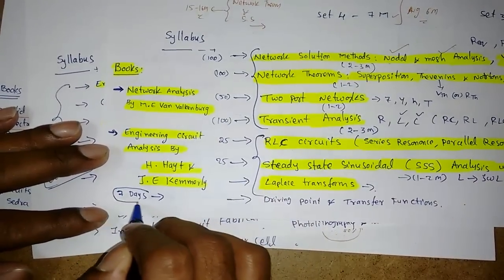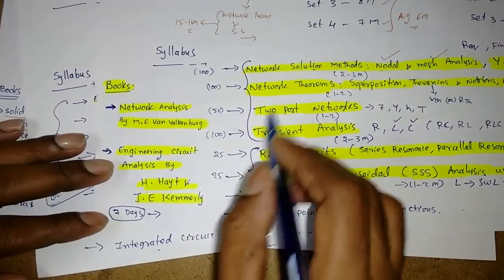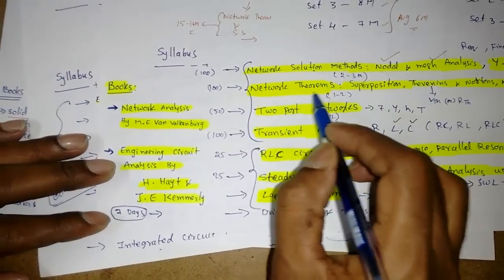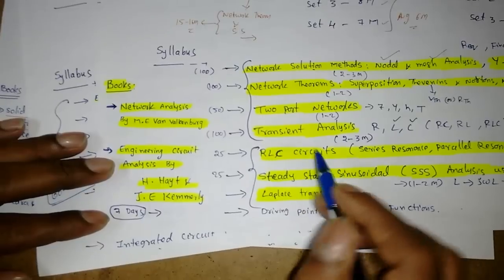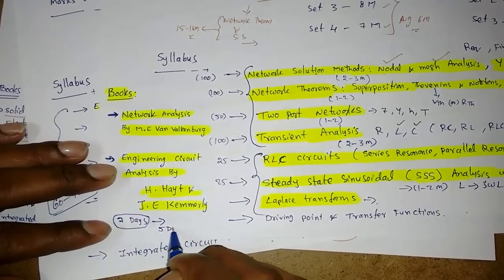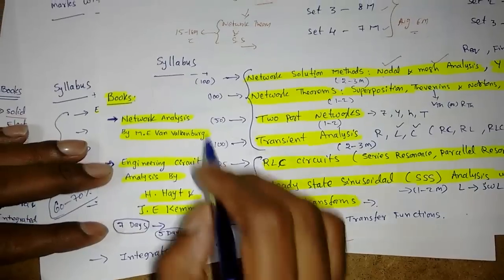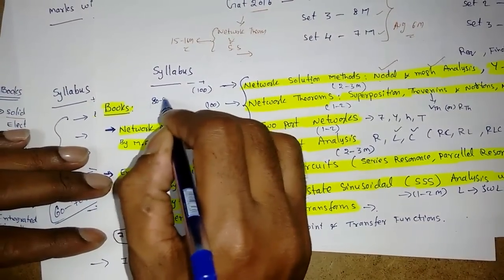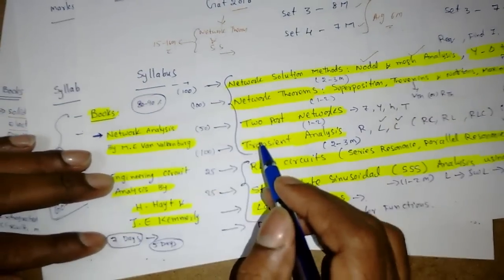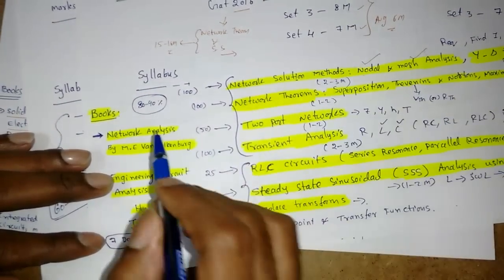In this seven days, do the practice of network solution method, network theorems. Each day go for only network solution methods, then network theorems, then two port networks, transient analysis, RLC. Seven days is maximum but I am sure we can finish in five days also. If you do like this, I'm sure you will get 80 to 90% of the marks from this network theory. Suppose it has given seven marks or eight marks, I'm sure you will get five to six marks. That is about the network theory subject for GATE exam.